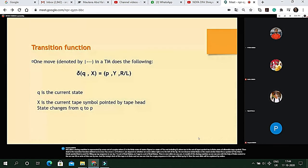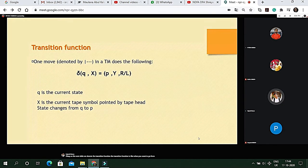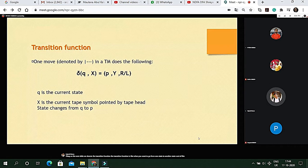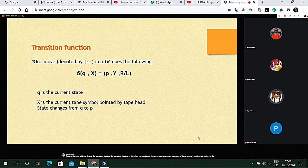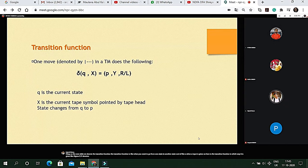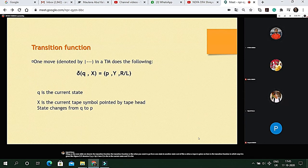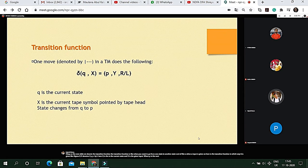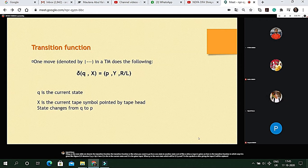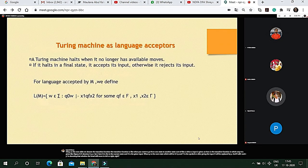The next slide we denote the transition function. The transition function is like when you want to go from one state to another state when an input is given. So here is how the transition function is given. Sigma Q X denotes to P Y R or L. Here Q is the current state and X is the given input. Where P is the next state which will be Q to P and Y is the symbol where after giving the input, X will be replaced by Y. And R or L is denoting that whether the head will move to left or right. R denotes right and L denotes left.